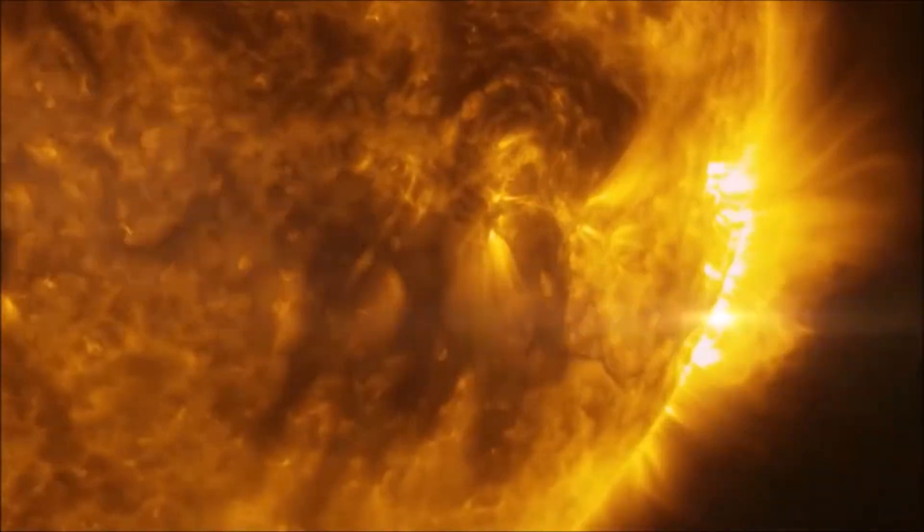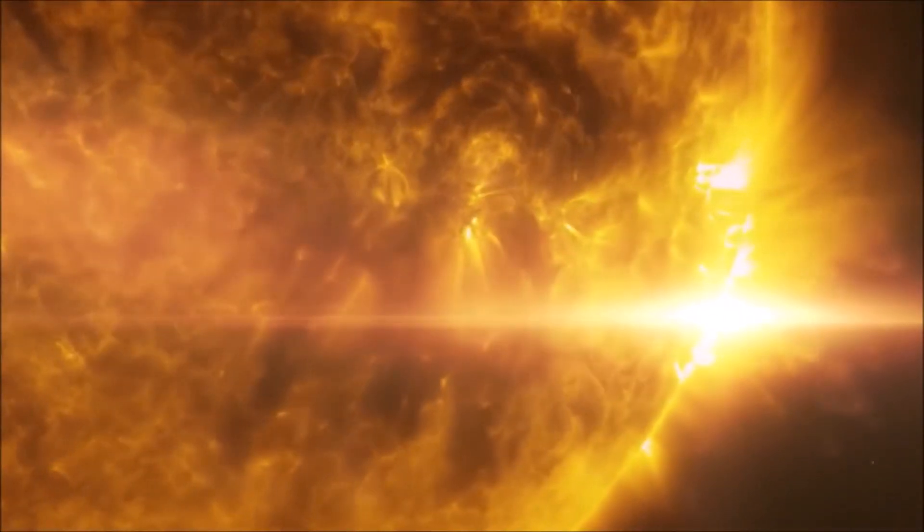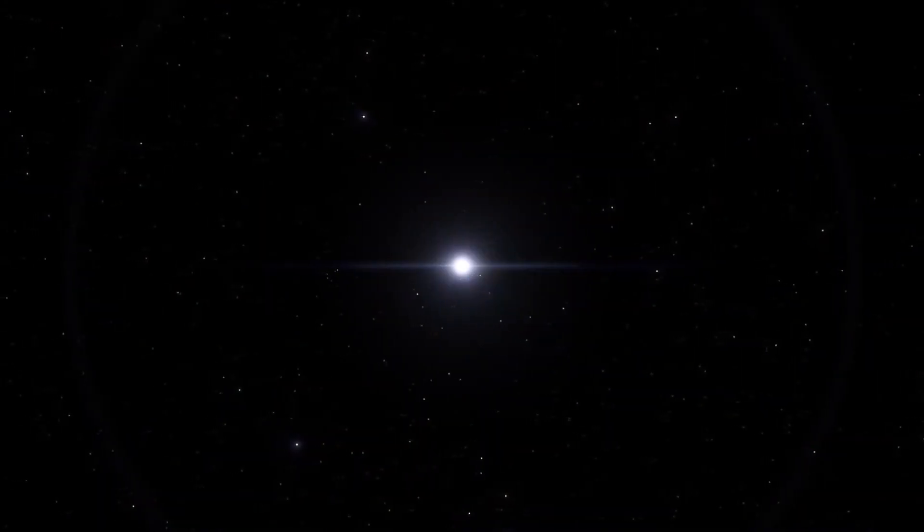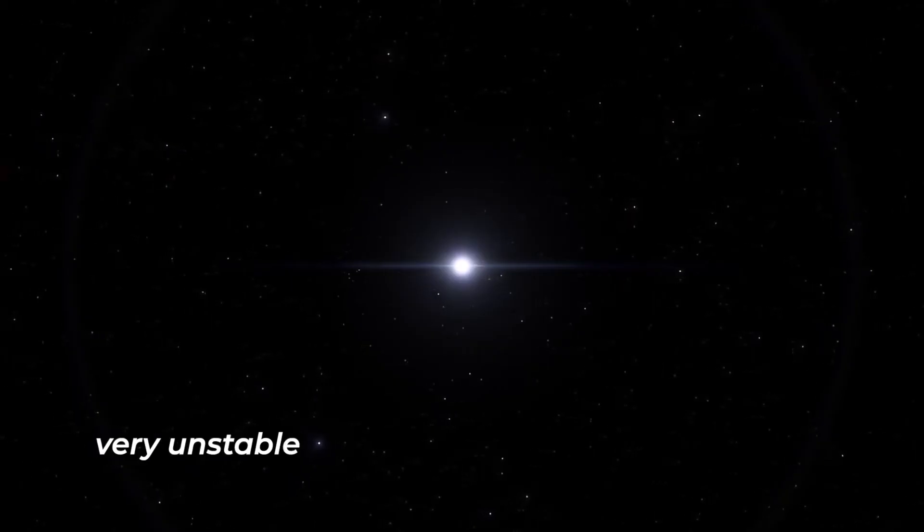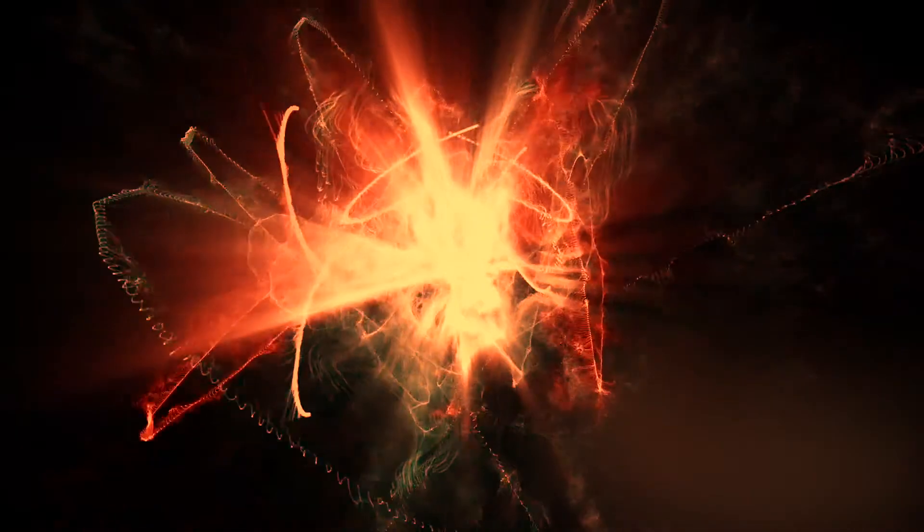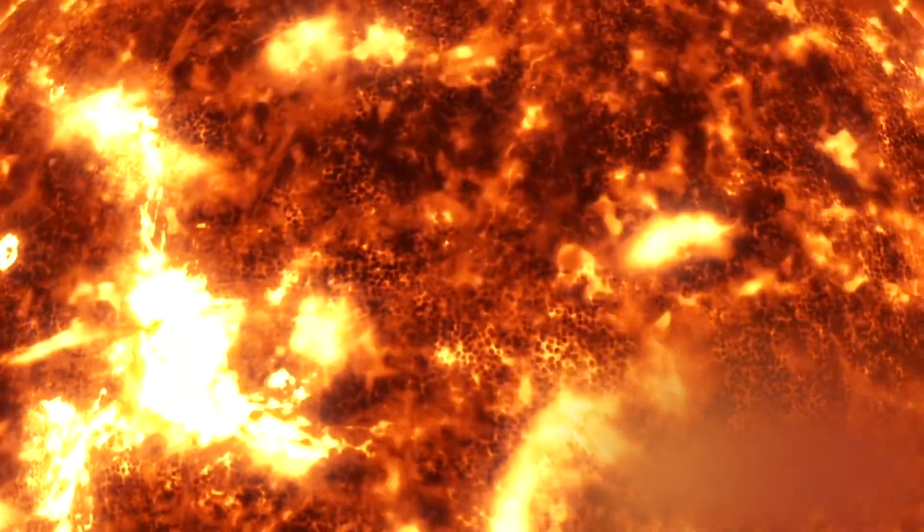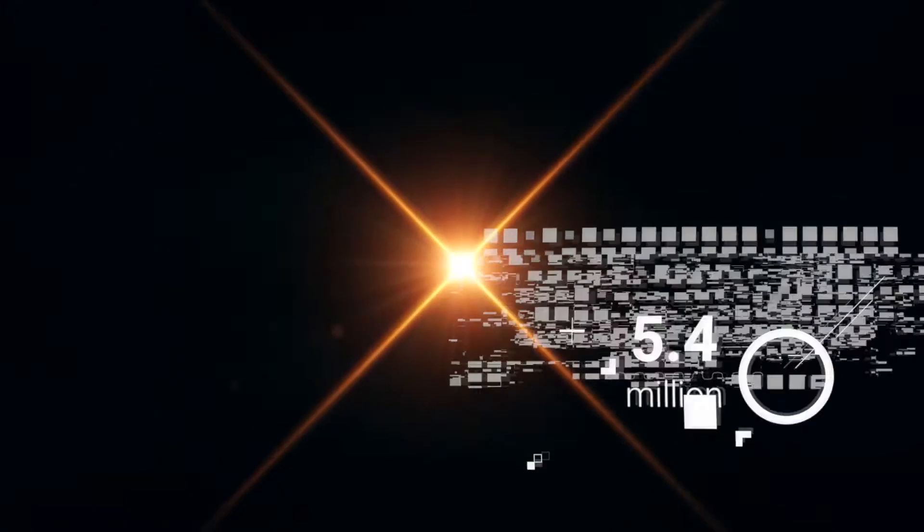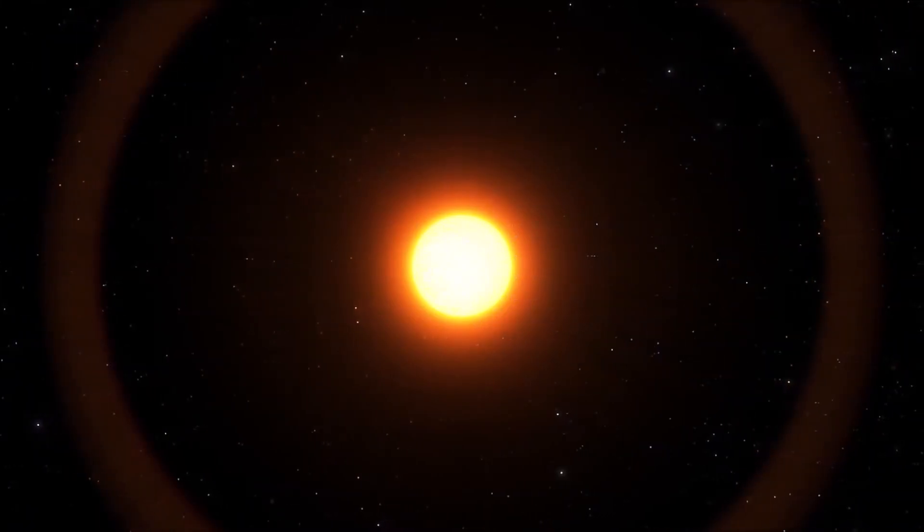This is a fledgling T Tauri star. They are hot and bright, but the core is not yet hot enough nor dense enough to crush hydrogen atoms together. Before fusion begins, T Tauri stars are also very unstable, known to vary in brightness quickly and chaotically, periodically giving off sudden bursts of powerful solar wind.